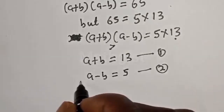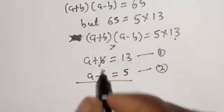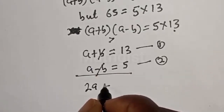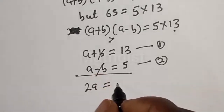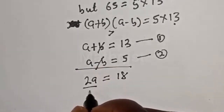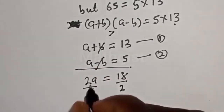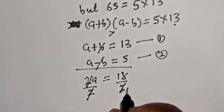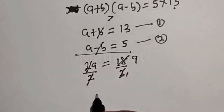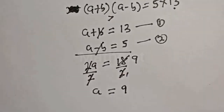Adding equation 1 and equation 2 together, the b terms cancel. We get 2a = 13 + 5 = 18. Dividing both sides by 2, a = 9.